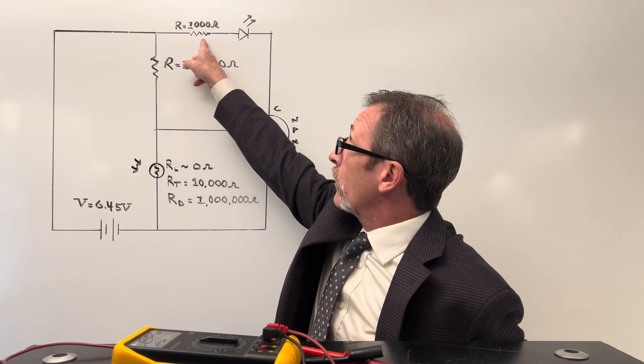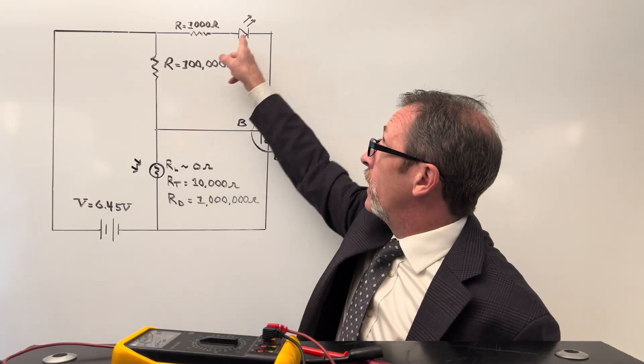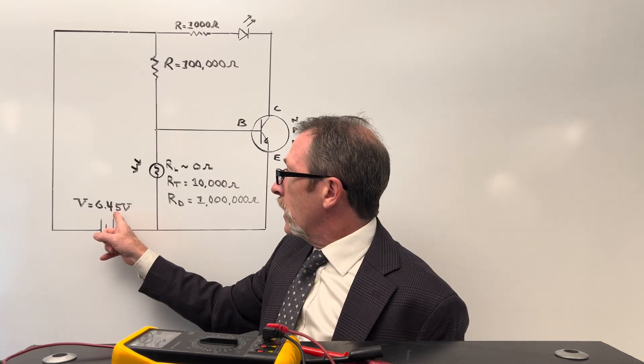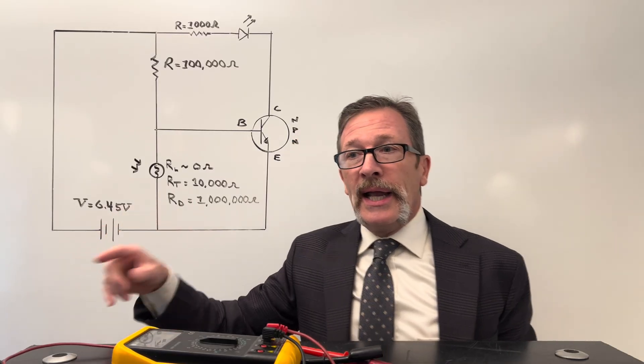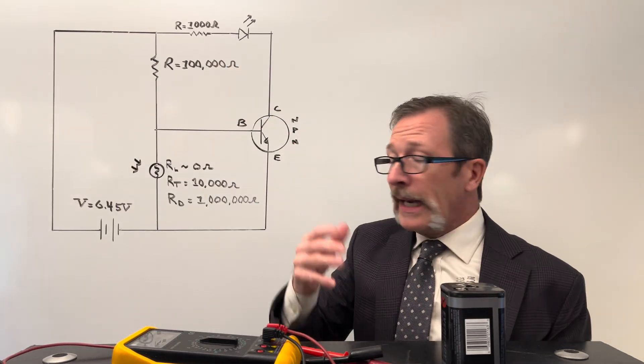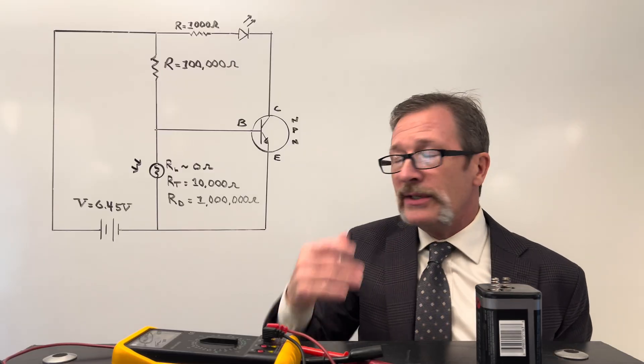We have another resistor here. It's a thousand ohm and it's right in front of an LED. We're going to need that because I'm using a very large battery, a lantern battery. This one happens to be running down a little bit. It's 6.45. I just measured it.